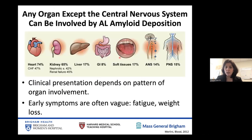Any organ except the central nervous system can be involved by AL amyloidosis, with the heart being the most frequently involved organ, followed closely by the kidney and other organs. As the organs involved vary from patient to patient, and more than one organ can be involved simultaneously, the clinical presentation can be very different. Early symptoms are often vague — fatigue, lack of stamina, weight loss, or lack of appetite — and not necessarily specific for this disease.